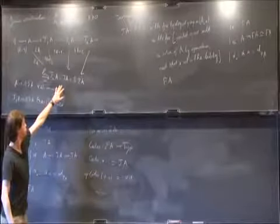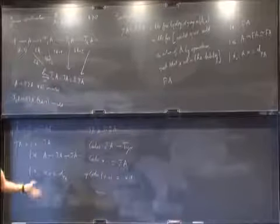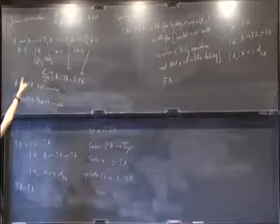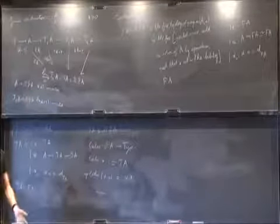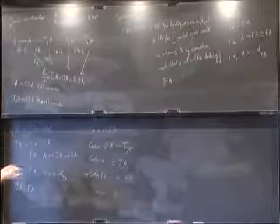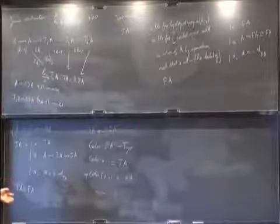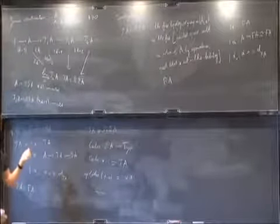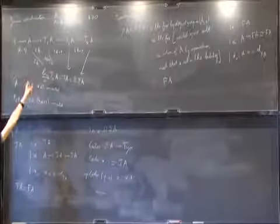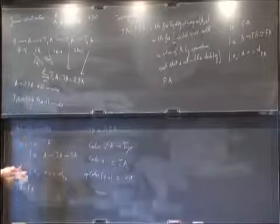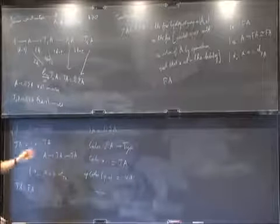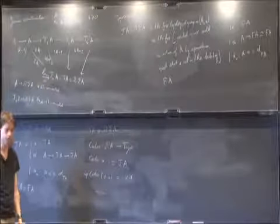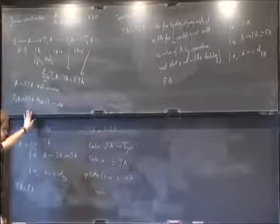So J(A) can be thought of as the free topological monoid on A. And what are the Jₙ(A)? Intuitively, Jₙ(A) is the subspace consisting of words of length at most n. Words of length at most 0: only the empty word, so you get 1. Words of length at most 1: exactly all elements of A. Then J₂(A), J₃(A), and so on, are words of length at most n.